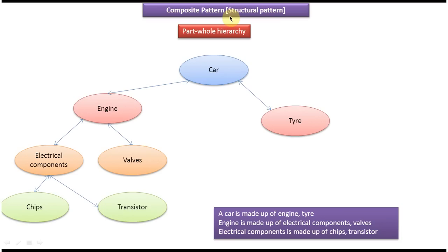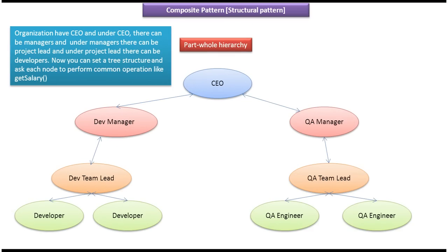Another part-whole hierarchy example is an organization chart. In an organization there will be one CEO, and under the CEO there can be two managers. Under each manager there can be a number of development team leads, and under each team lead there will be developers who write the code. On the right side, under the manager there can be a QA team lead, and under the QA team lead there can be a number of QA engineers who test the code. This is an organization chart — a tree structure and a best example of part-whole hierarchy.